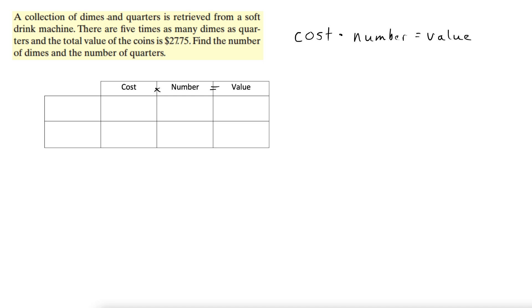So what do we get? We have dimes and quarters, so I'll put dimes here, dimes and quarters down here. The cost of a dime is 10 cents, 0.1. You don't have to put one zero because a zero to the right of a number that's to the right of a decimal does not matter. Quarter is 0.25.